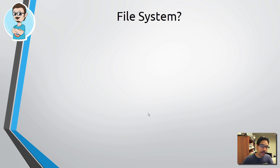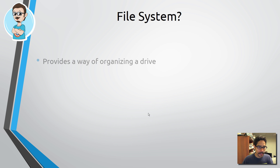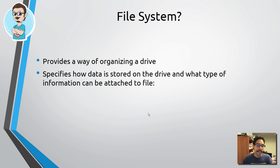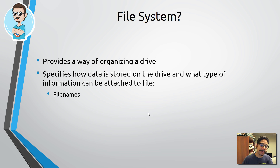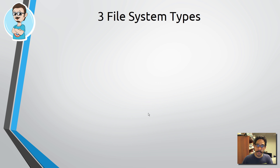Now, file systems. All three of these are considered a file system. So what is a file system? It provides a way of organizing a drive, specifies how data is stored on the drive and what types of information can be attached to the file, such as file names, permissions, and other attributes.